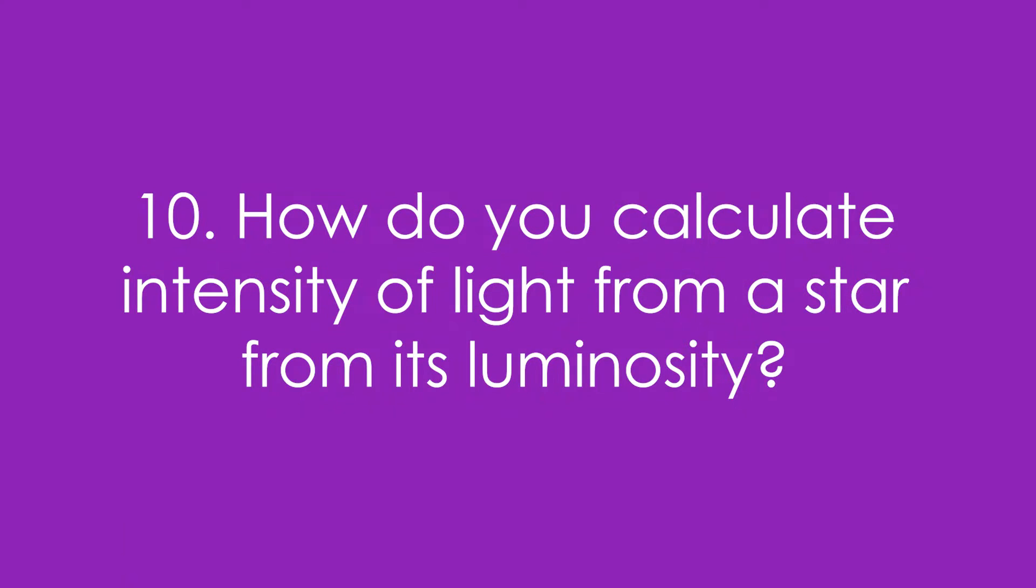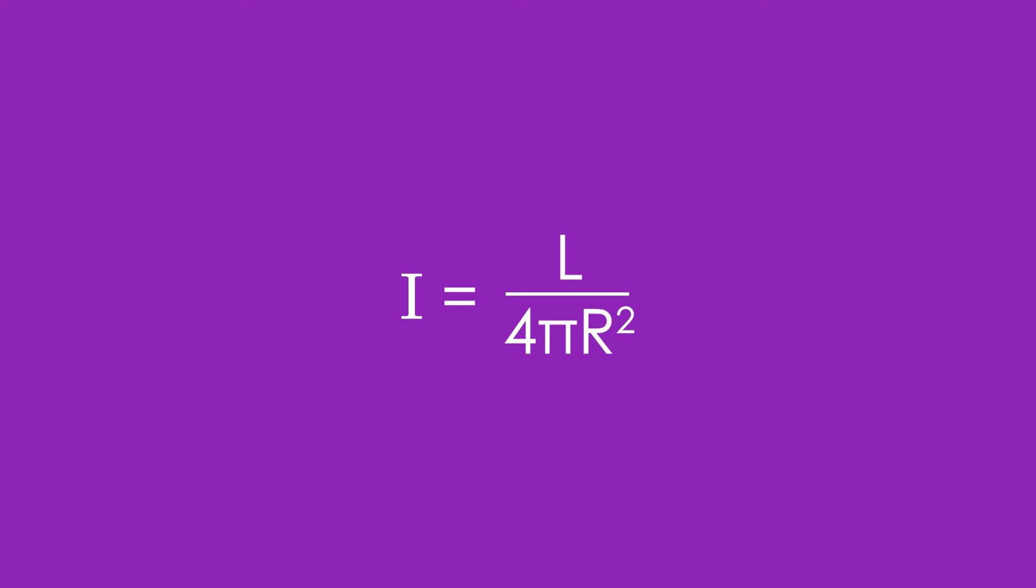Let's go on to some questions just for A-level. Question 10: How do you calculate intensity of light from a star from its luminosity? Luminosity is the overall output power from a star and intensity is watts per meter squared. So therefore we take the luminosity and divide by the area of the sphere that we're sitting at the edge of and that gives us the intensity.